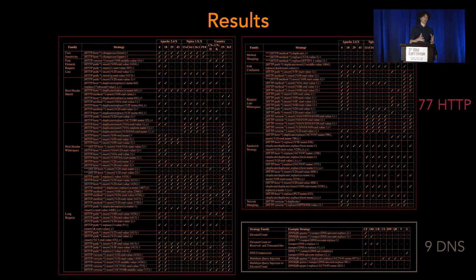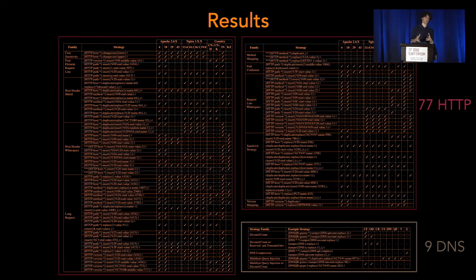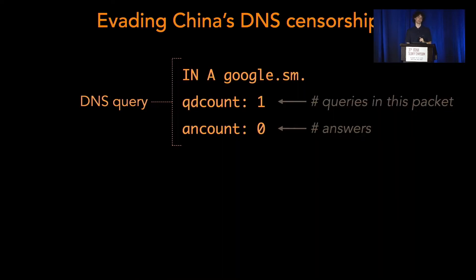We find a lot of results. We train against the cross-products — from each country, we train against each server — and find a lot of strategies. We found 77 HTTP strategies and 9 DNS strategies.